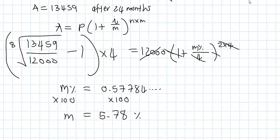Just a little correction here — it should be 0.05... there are two decimal places there, but the final answer is correct. That concludes Question 6.1.